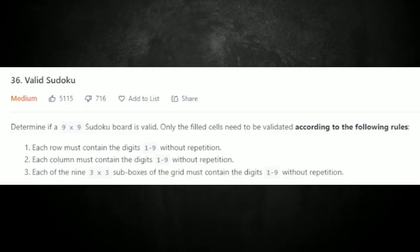This problem I'm going to be doing is Valid Sudoku. We've got a medium problem: determine if a nine by nine sudoku board is valid. Only the filled cells need to be validated according to the following rules. Rule number one: each row must contain the digits one through nine without repetition. Rule number two: each column must contain the digits one through nine without repetition. Rule number three: each of the nine three by three sub-boxes of the grid must contain the digits one through nine without repetition.